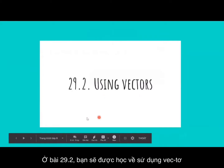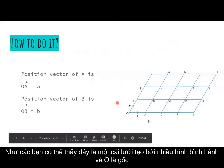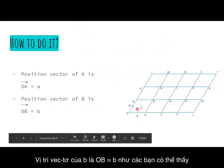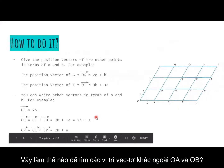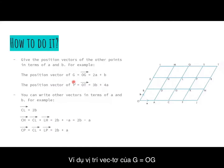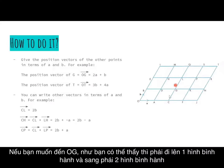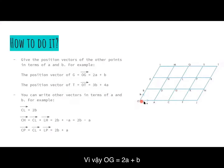Now you will study about using vectors. The diagram is a grid made of many parallelograms. We see the origin O, so the position vector of A is OA equals vector a, and the position vector of B is OB equals vector b. For example, the position vector of G is OG. If you move to OG, you go up one parallelogram and move to the right one parallelogram, so it's going to be b plus 2a.